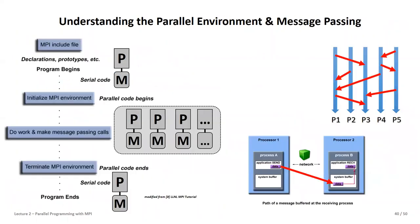So let's understand message passing a bit more. We have the MPI include file at the top, and everything is still serial until we have the MPI_Init statement and MPI_Finalize — only between these can we write messages. The MPI environment creates ranks for different processors and communicators. Once the parallel code ends we are back in serial space — the rank information is gone and we can no longer address other processors.